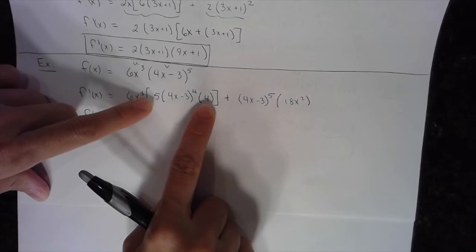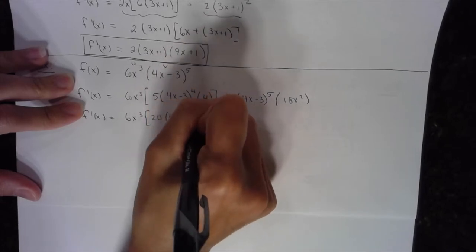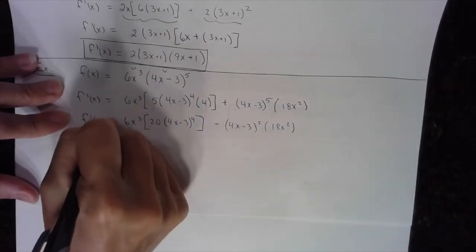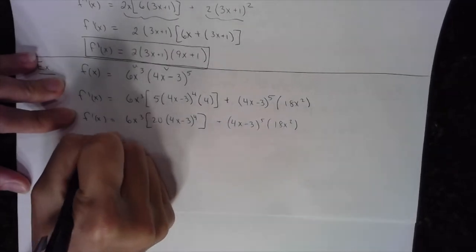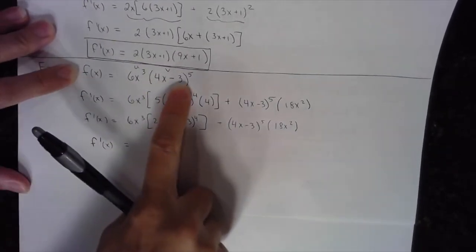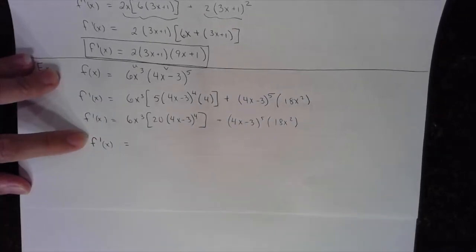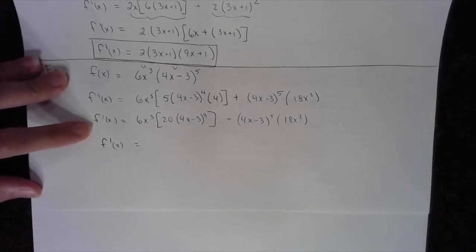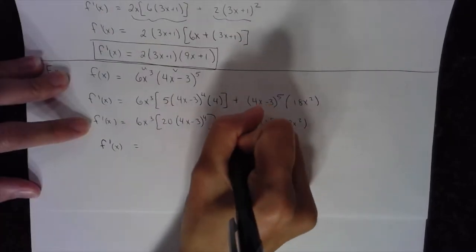Simplify. The only thing I'm changing first is multiplying 5 times 4 to get 20. So I keep 6x³ times [20(4x − 3)⁴ times 4] plus (4x − 3)⁵ times 18x². Notice that I continue to write f′(x) throughout — when you do higher-order derivatives you need to know which expression is which. Always label things so you can backtrack. Don't forget to label.